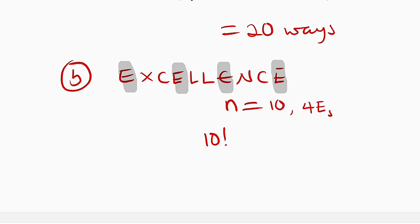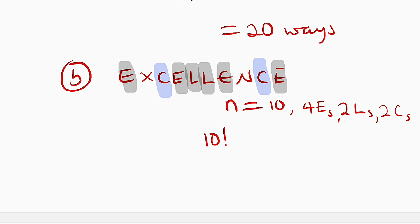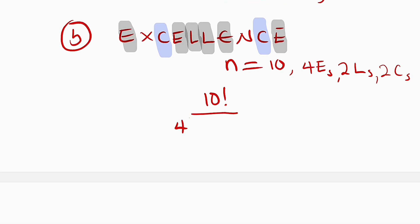Likewise, we have how many L's? One, two — we have two L's. And also we have two C's: one, two — we have two C's. So the formula is ten factorial divided by four factorial, multiplied by two factorial, multiplied by two factorial.